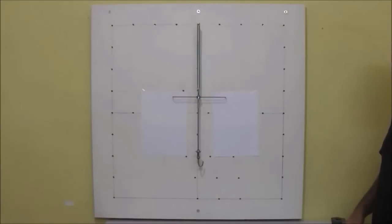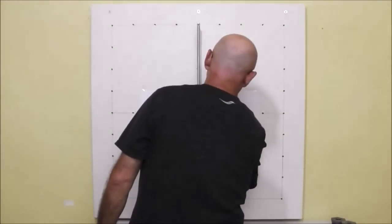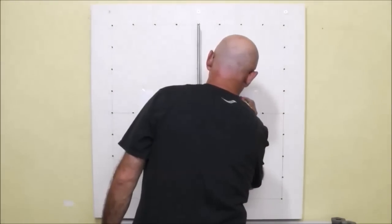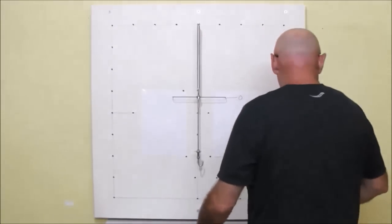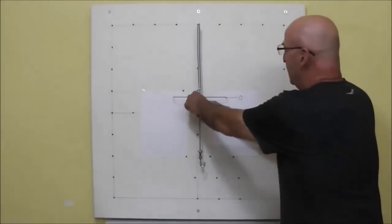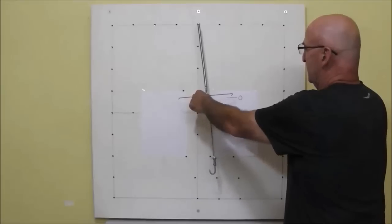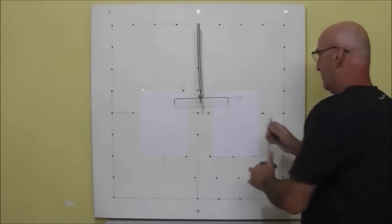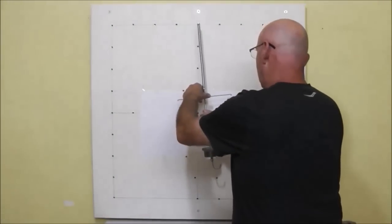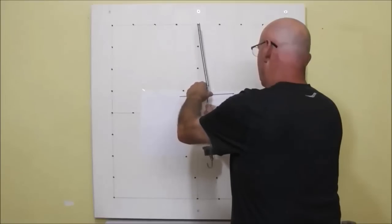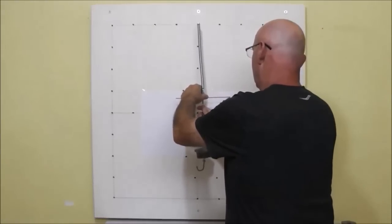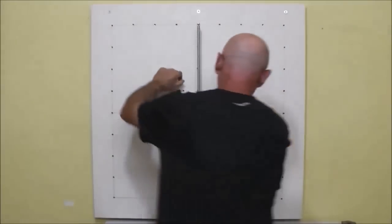First, we mark the zero point of the spring on the paper. Now, we hang a weight of 500 grams. We take the reading.